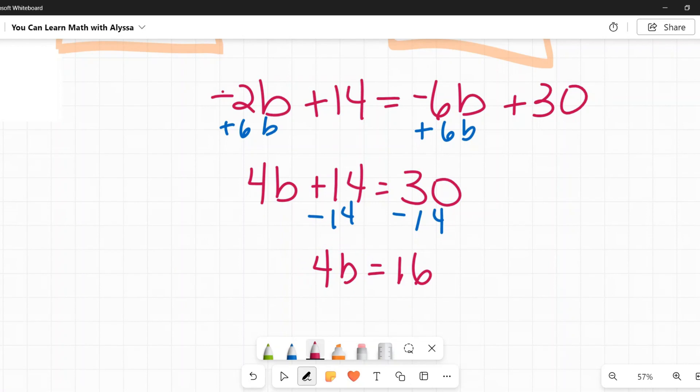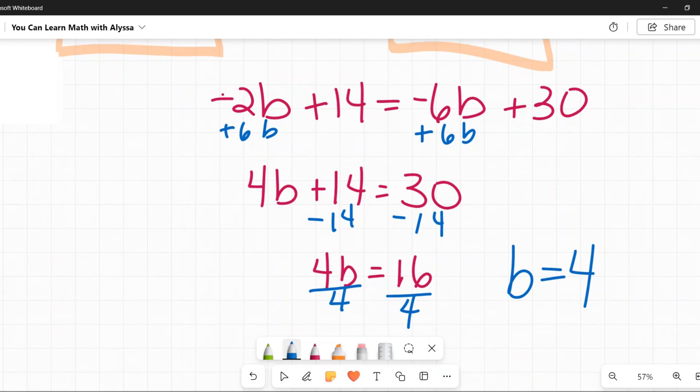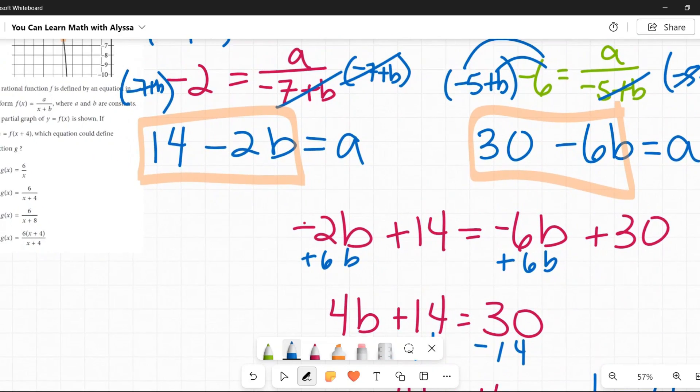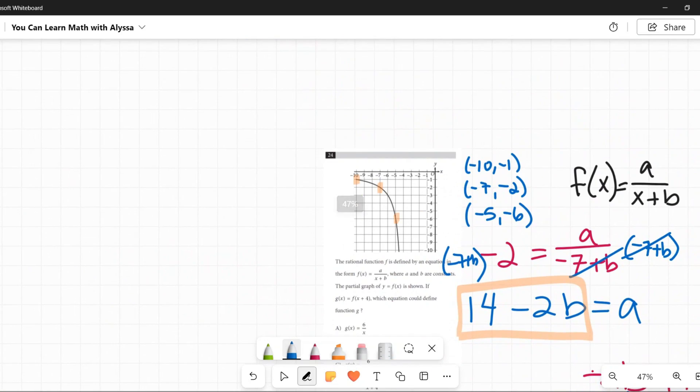So I'm going to subtract 14 from both sides. And I get 4b is equal to 16. Okay. Since b is being multiplied by 4 to undo that, I need to do the opposite. Divide by 4. So now I know b is equal to 16 divided by 4 or 4. I know b is 4.